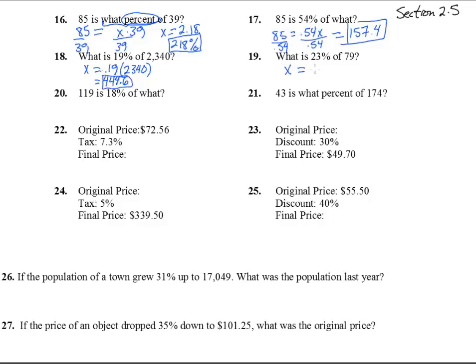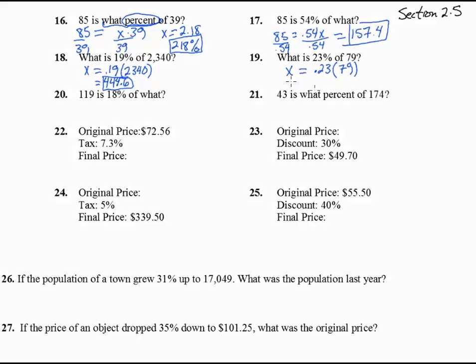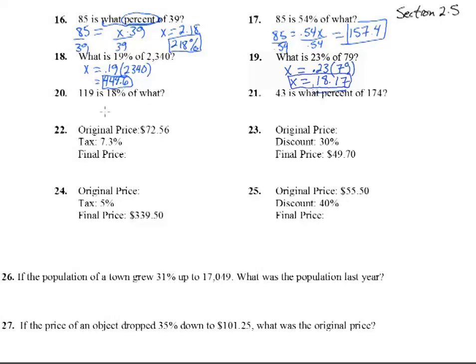What is 23%, .23, of, meaning times, 79? Again, we don't even have to solve anything, we just do 23% of 79, which, putting it into a calculator, is 18.17. Number 20.